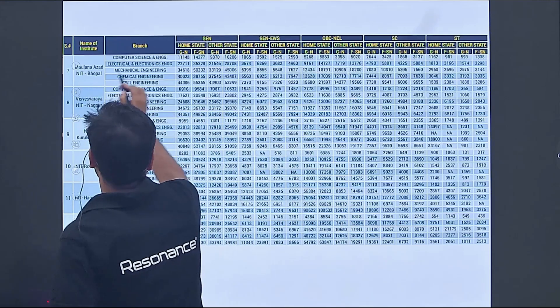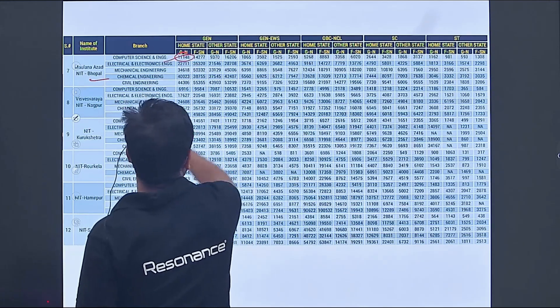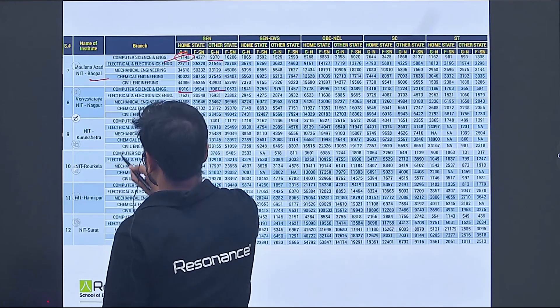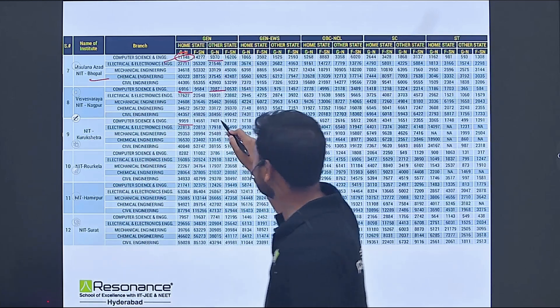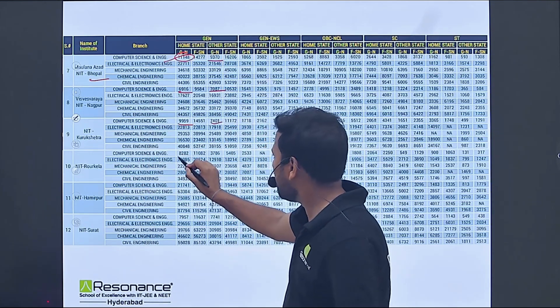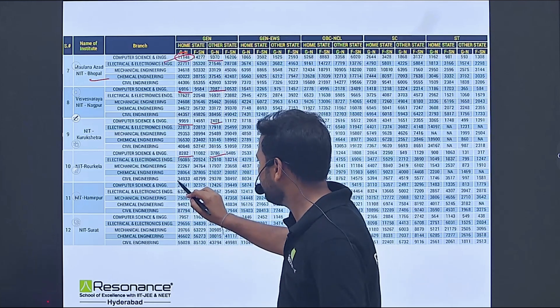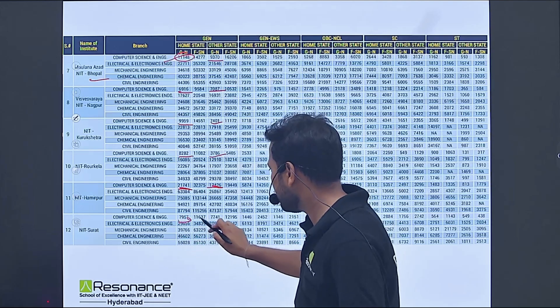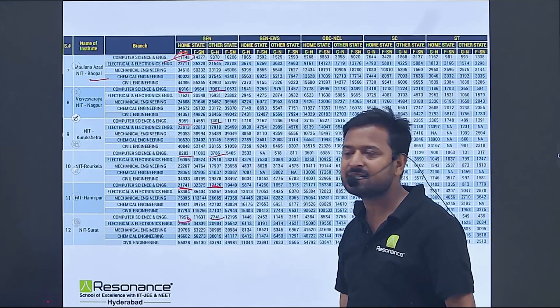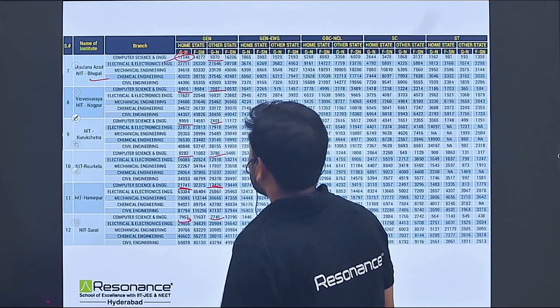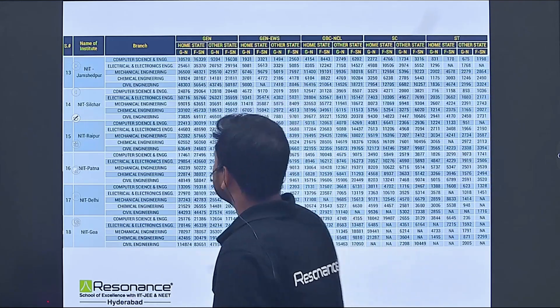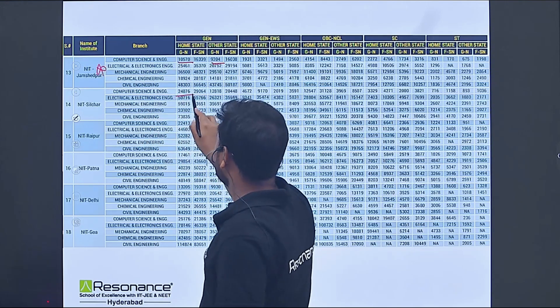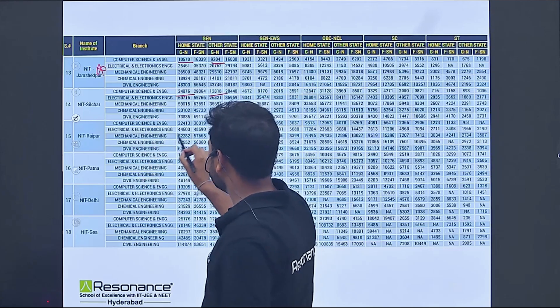NIT Bhopal 11148 and 9370. NIT Nagpur CSE 6916 and 7087. NIT Kurukshetra 9959 and 7401. NIT Rourkela 8282 and 3786. NIT Hamirpur 21741 and 12426. NIT Surat 7957 and 7741. NIT Jamshedpur 10570 and 9204.